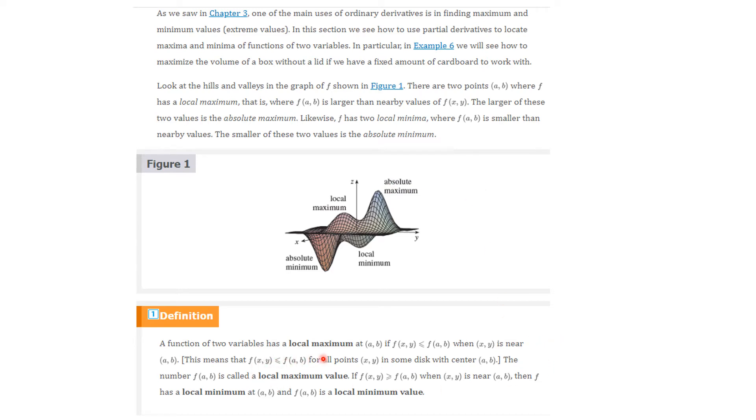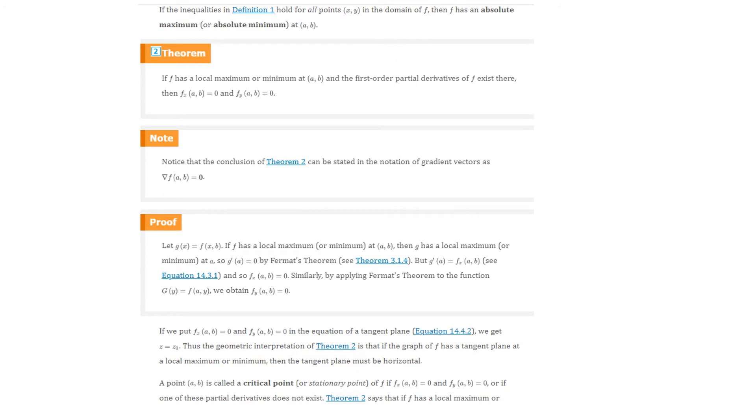And here is the definition of a local maximum. A local maximum is found at AB if f of AB is bigger than everything or equal to everything near it. And similarly, a local minimum is if f of AB is less than anything that is near it. So, those definitions line up with what we had before.